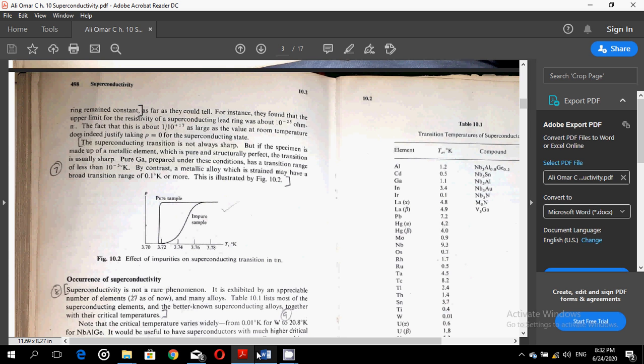But if the specimen is made up of a metallic element which is pure and structurally perfect, the transition is usually sharp. Pure gallium prepared under these conditions has a transition range of less than 10 to the power minus 5 degrees K. In contrast, a metallic alloy which is strained may have a broad transition range of 0.1 degrees K or more. This is illustrated by this figure 10.2.